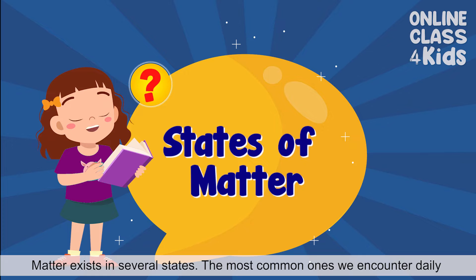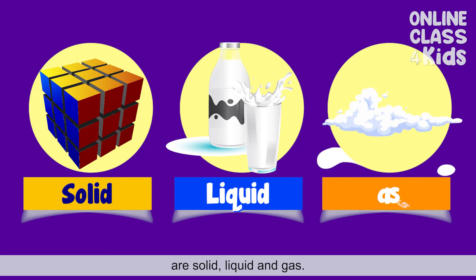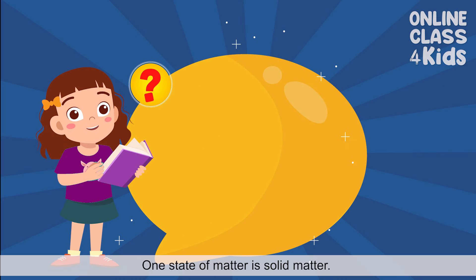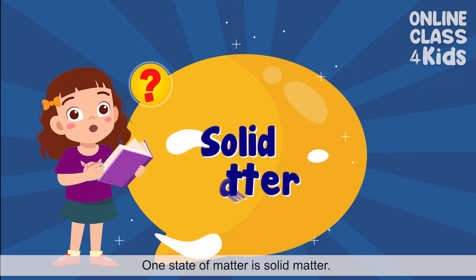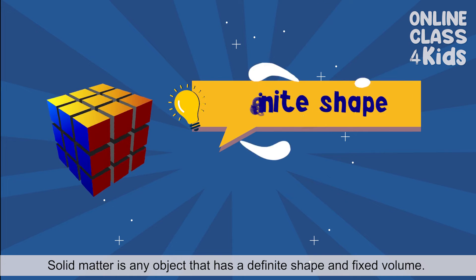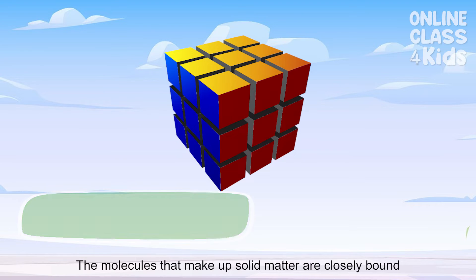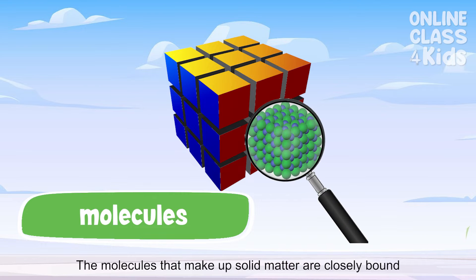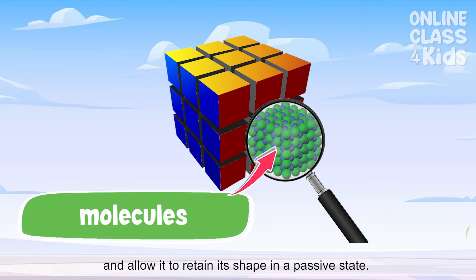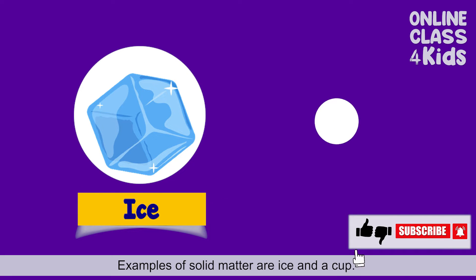Matter exists in several states. The most common ones we encounter daily are solid, liquid, and gas. One state of matter is solid matter. Solid matter is any object that has a definite shape and fixed volume. The molecules that make up solid matter are closely bound and allow it to retain its shape in a passive state. Examples of solid matter are ice and a cup.